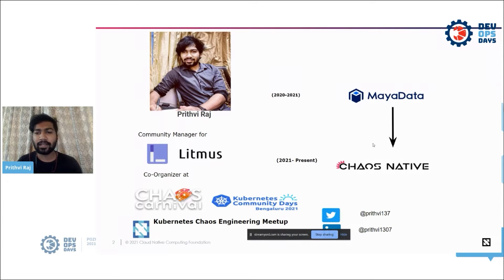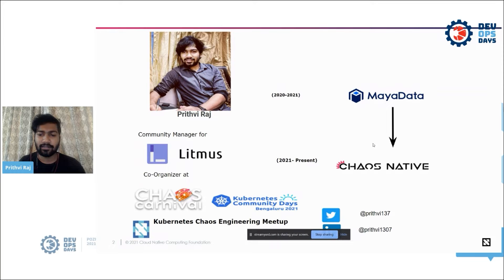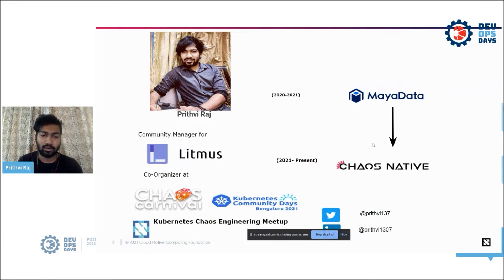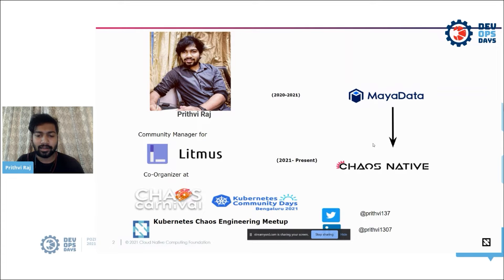A little bit about me — my name is Prithviraj. I work as a community manager for the LitmusChaos project. It all started back at my data in 2020, but now I'm part of ChaosNative, one of the main sponsors of the LitmusChaos project. I've also worked as a co-organizer for KCD Bengaluru, Kubernetes chaos engineering meetups every last Saturday of the month, and Chaos Carnival, an event based on chaos engineering. You can connect with me on Twitter and LinkedIn.